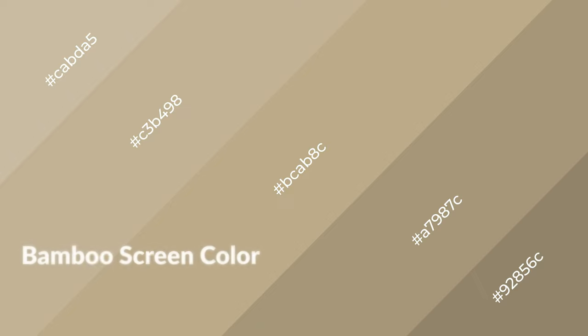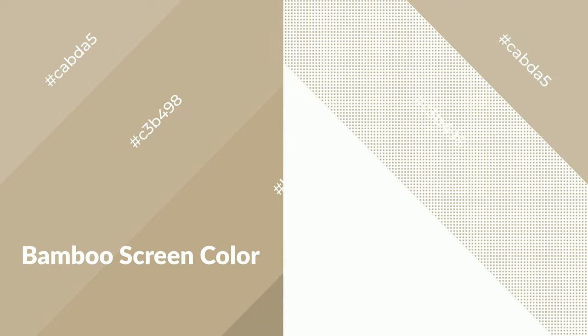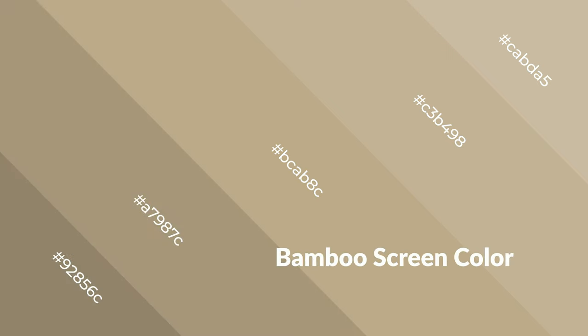Bamboo screen is a warm color and it emits cozier and active emotion. Warm colors are symbols of warmth, fire, heat, and sunshine. They also evoke joy, passion, love, and even anger emotions. You can see them used in restaurants and gyms.